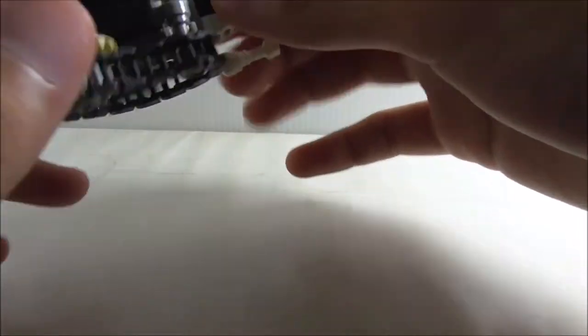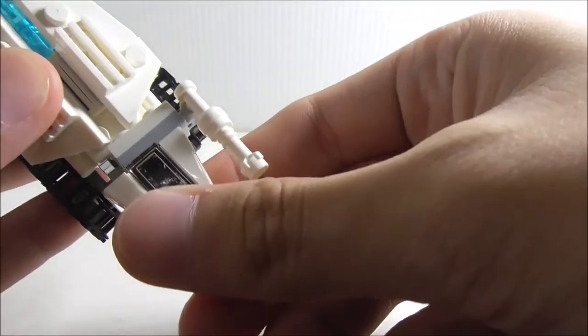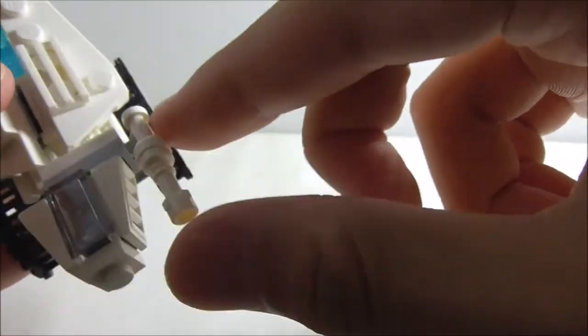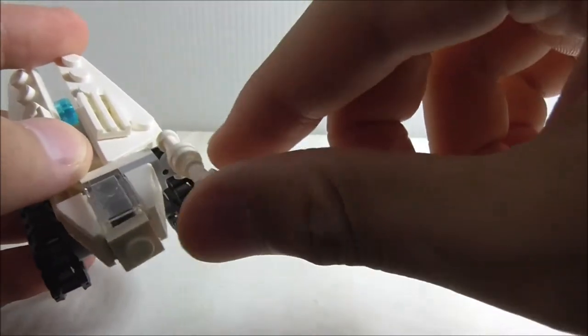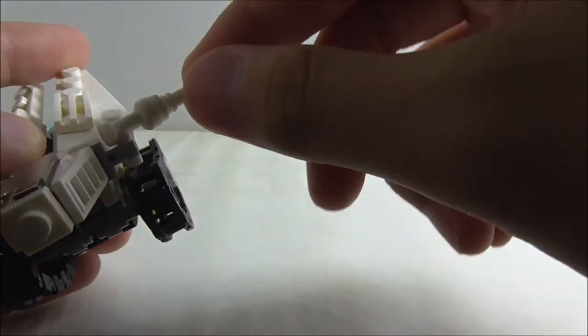At the front you've got this cockpit right here with this windscreen, and you've got this ice cannon at the side which is what they called it. You can kind of move it around to position it.